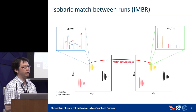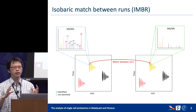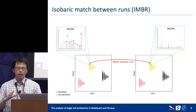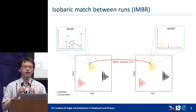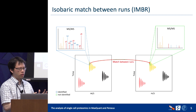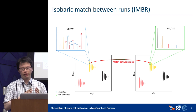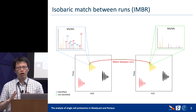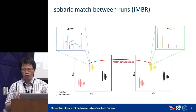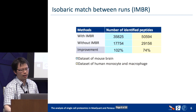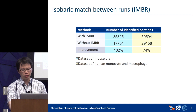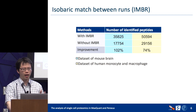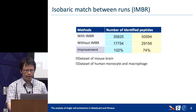The first method in MaxQuant is isobaric match between run. In this figure you can see two different experimental runs that look the same at MS1 level. But at the MS2 level, in the green square the identification signal is not very clear, whereas in the blue square we can see a sharp and clear signal. Since we have a barcode, we can use that to easily do match between run and increase the identified peptides for quantification. Applying this to both datasets, we can increase identifications by roughly 70 to 100 percent — 102% for the mouse brain dataset and 74% for the human macrophage and monocyte dataset.